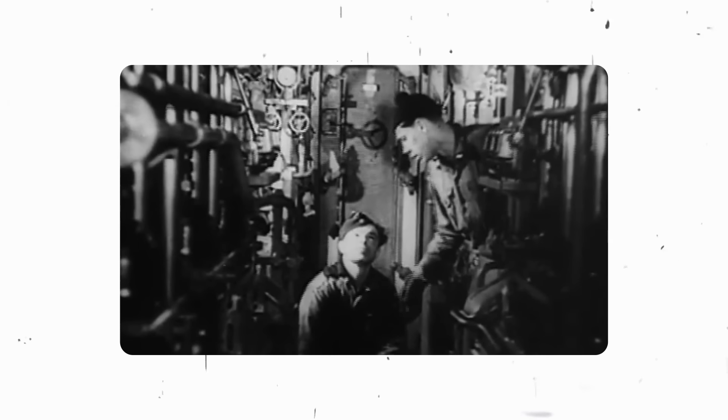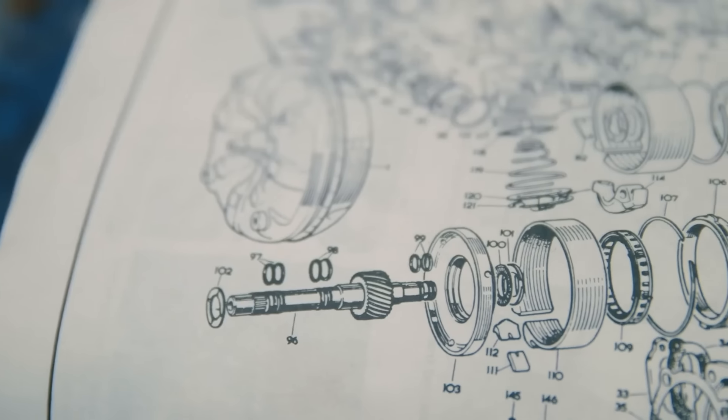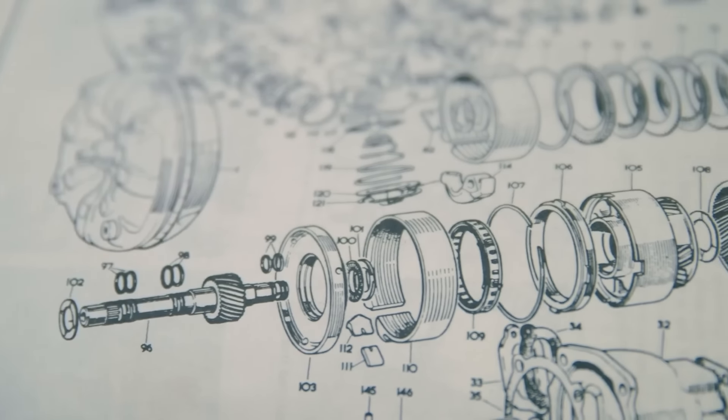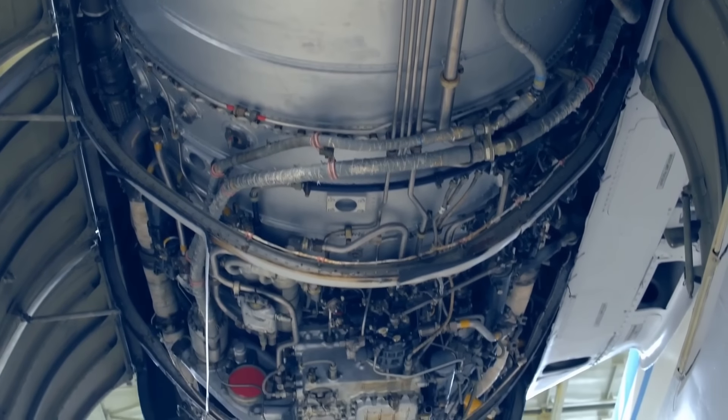But oxygen is another story. In usual conditions, nuclear subs extract oxygen from water. In general, one can easily imagine a device that will work like plants. With the help of external electricity, oxygen will be released from carbon dioxide.